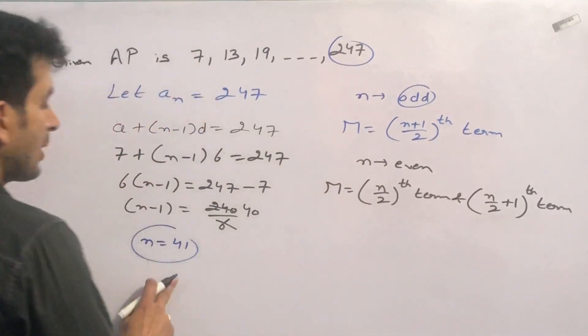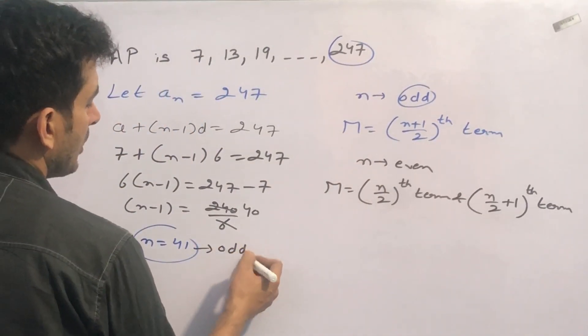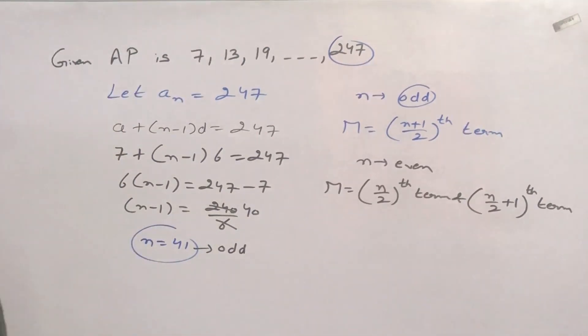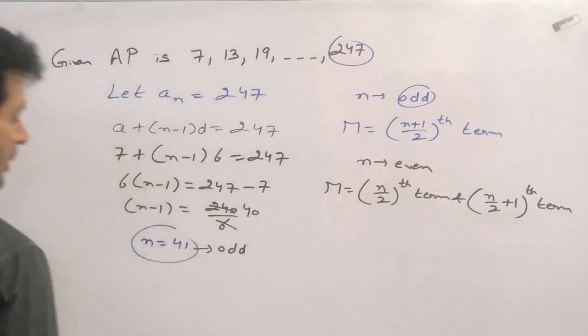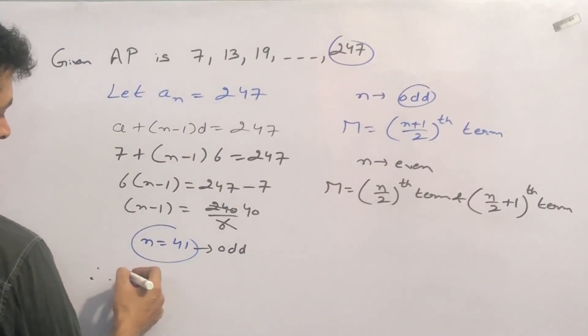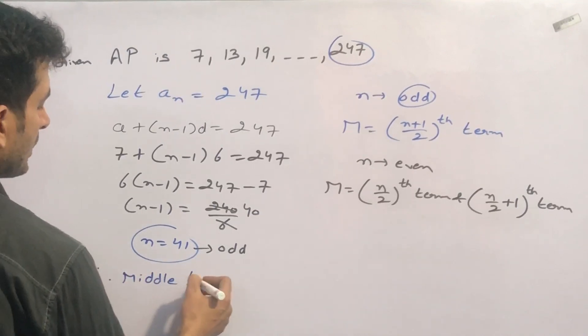But in our case N's value is 41. 41 means it's odd. Odd means the middle term is...